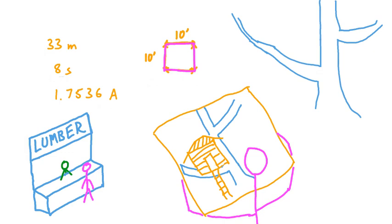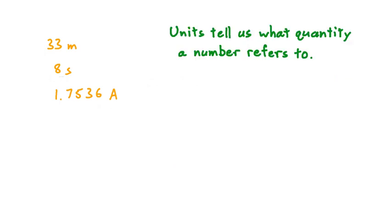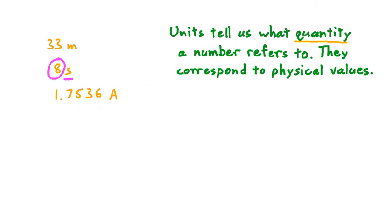So units, then, tell us just what quantity a given number refers to. All by themselves, a given number could refer to anything, but when we combine a number with a unit, we know what we're talking about. So while a number all by itself is an abstract quantity, when we include a unit with that number, now it corresponds to some physical value.